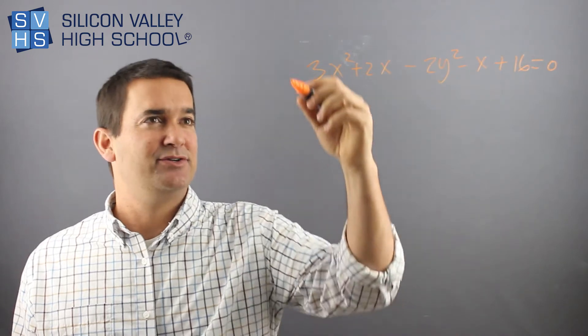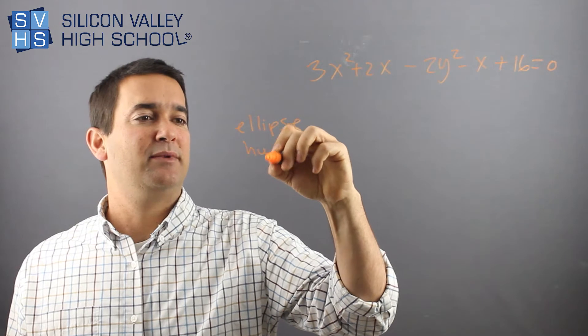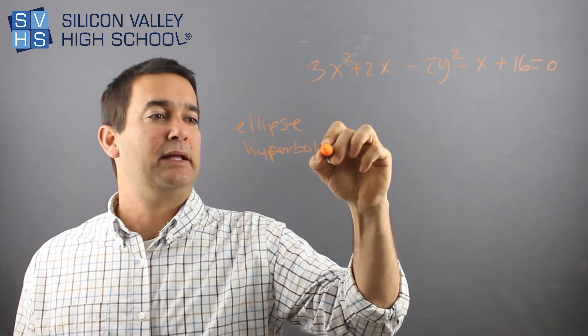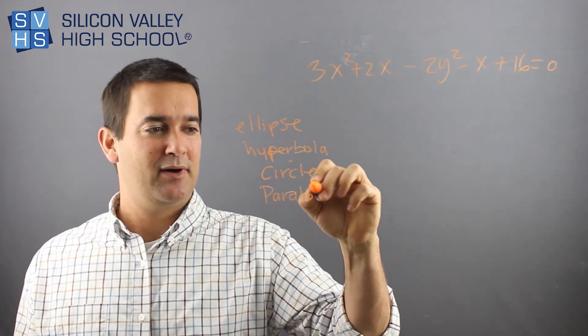And the options are usually going to be four things. So it's either an ellipse, a hyperbola, a circle, or a parabola, right?